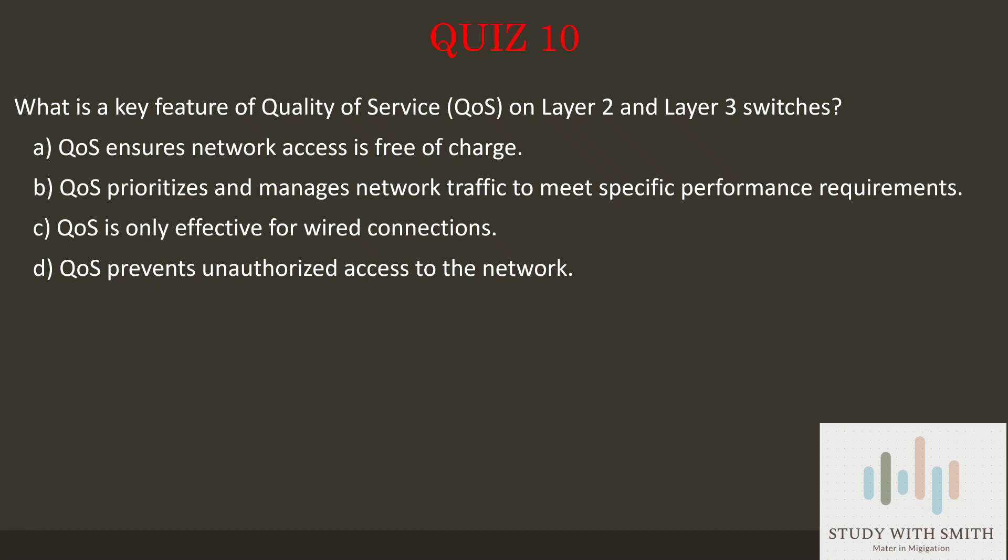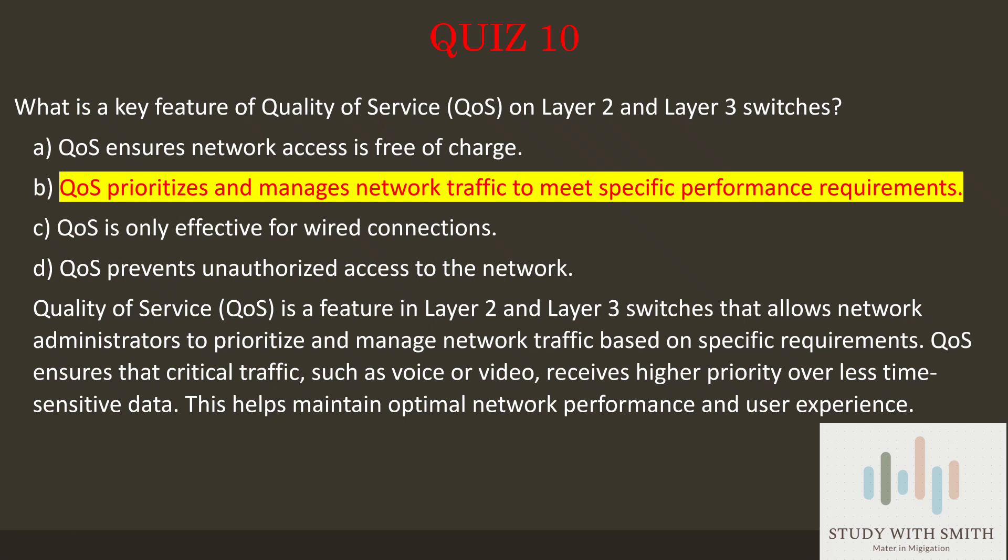The answer is B — QoS prioritizes and manages network traffic to meet specific performance requirements. Quality of Service, QoS, is a feature in Layer 2 and Layer 3 switches that allows network administrators to prioritize and manage network traffic based on specific requirements. QoS ensures that critical traffic, such as voice or video, receives higher priority over less time-sensitive data, helping maintain optimal network performance and user experience.